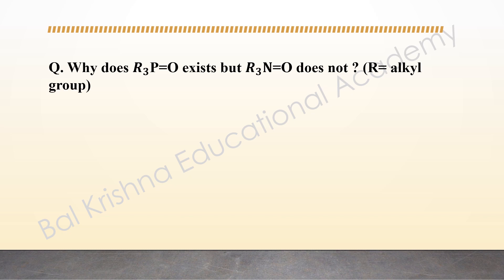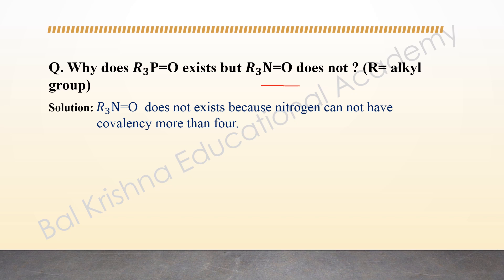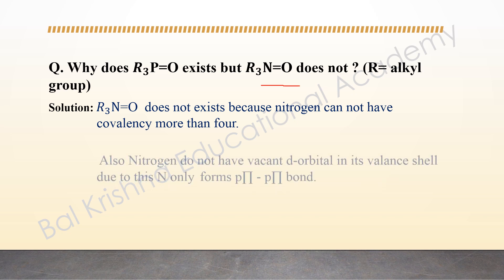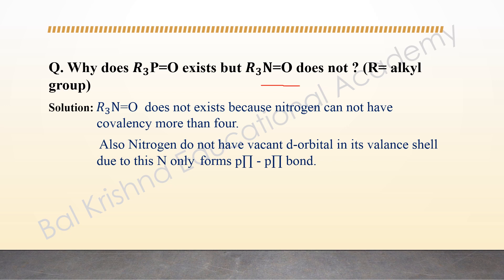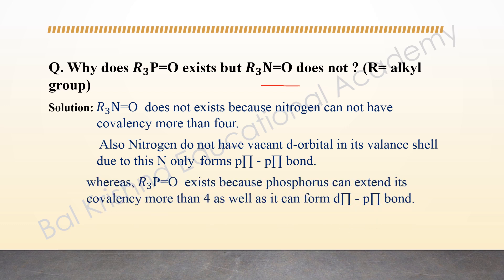The next question: why does R₃P=O exist but R₃N=O does not, where R is any alkyl group? R₃N=O does not exist because nitrogen cannot have a covalency greater than four and does not have vacant d orbitals in its valence shell, so it can only form pπ-pπ bonds. In contrast, R₃P=O exists because phosphorus can extend its covalency beyond four and can form dπ-pπ bonds.